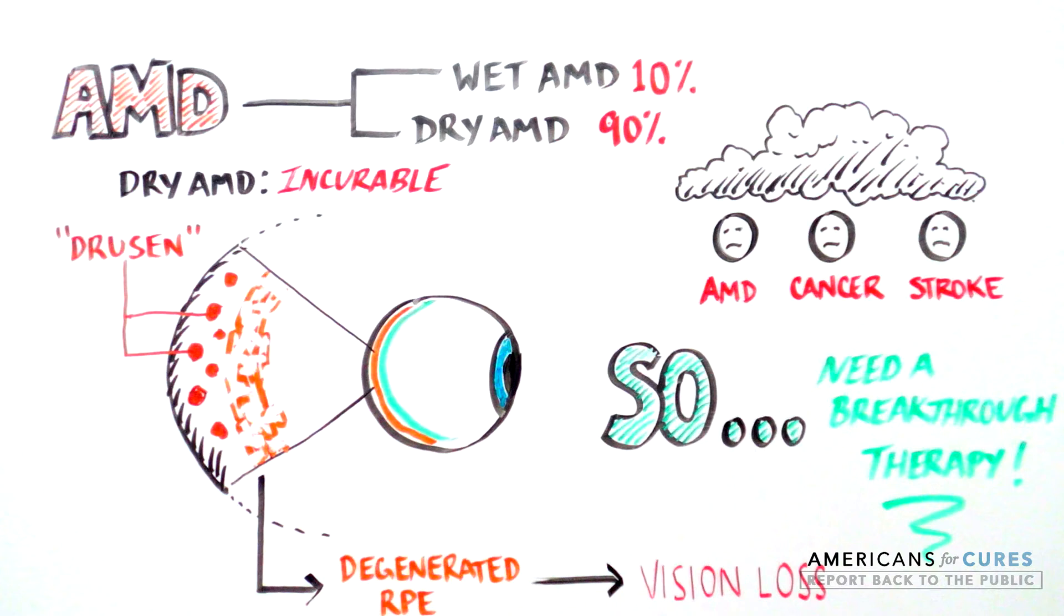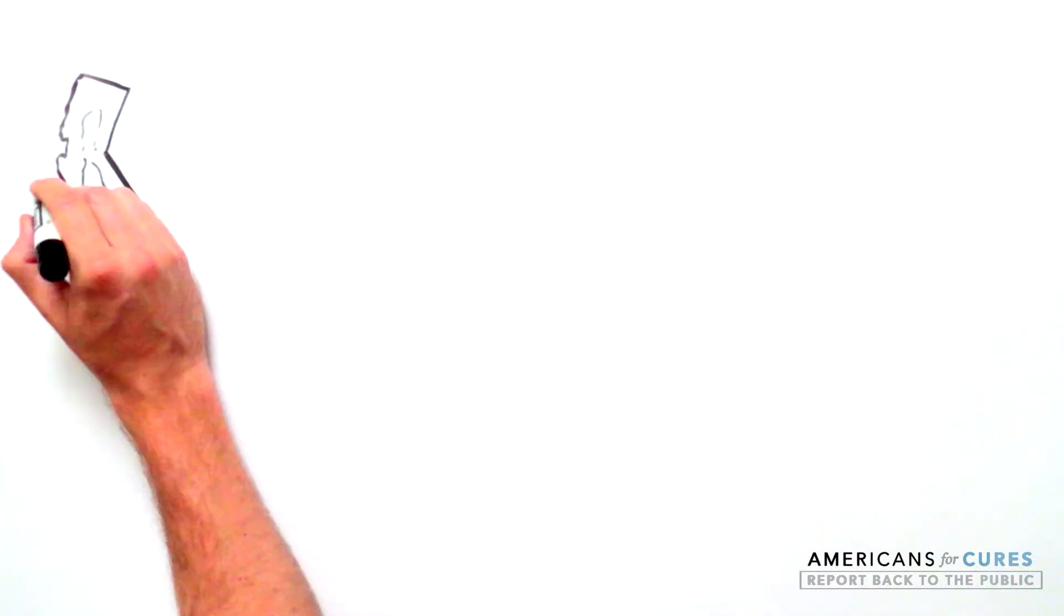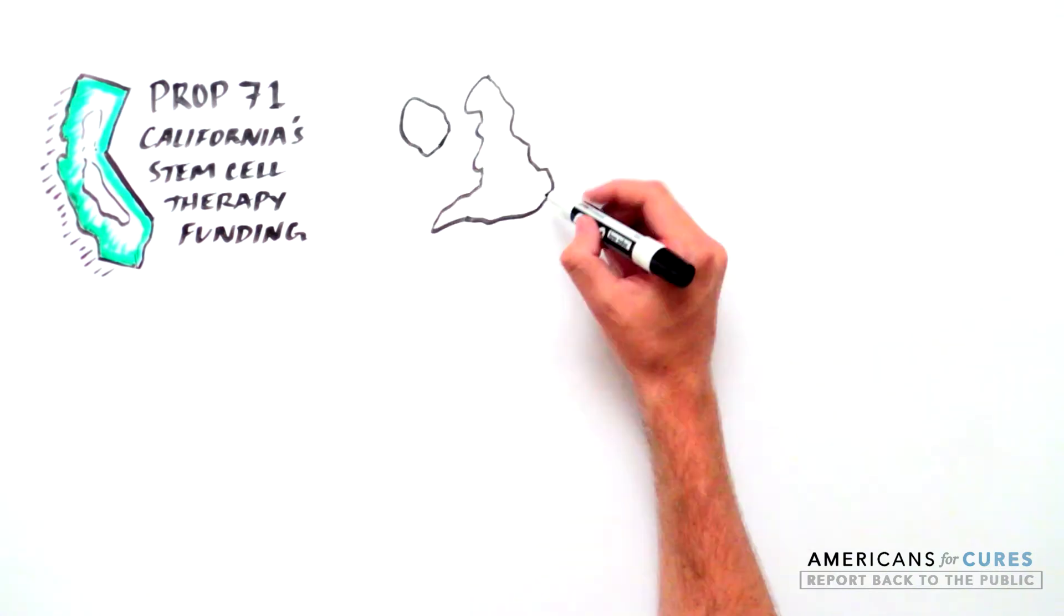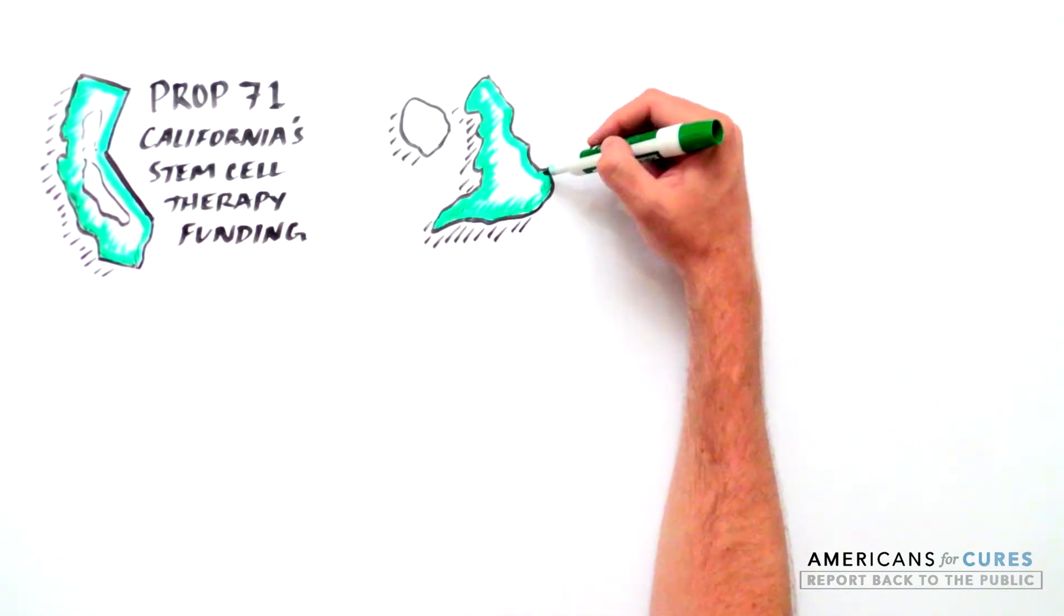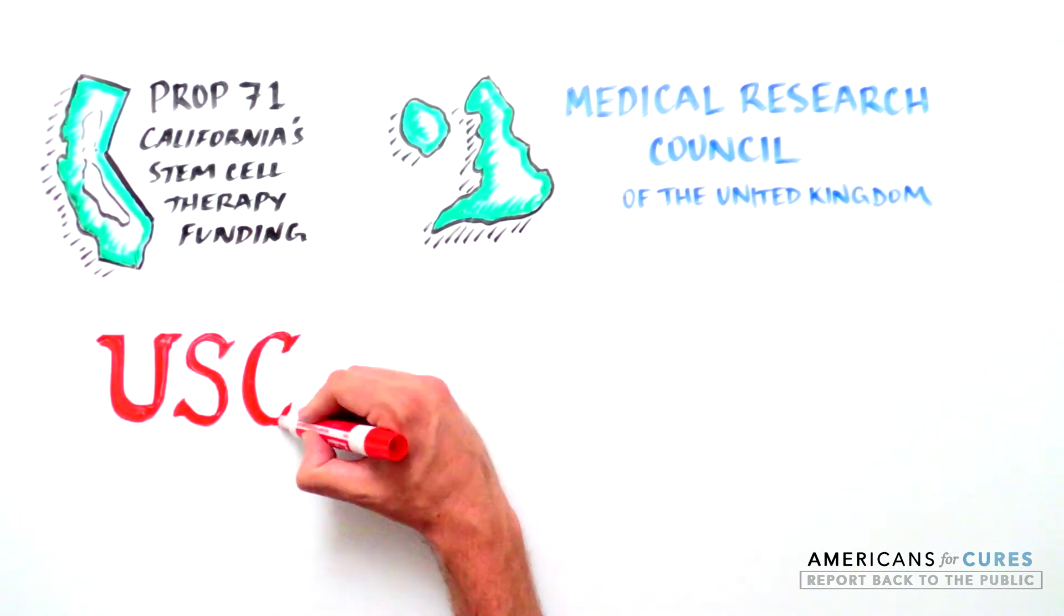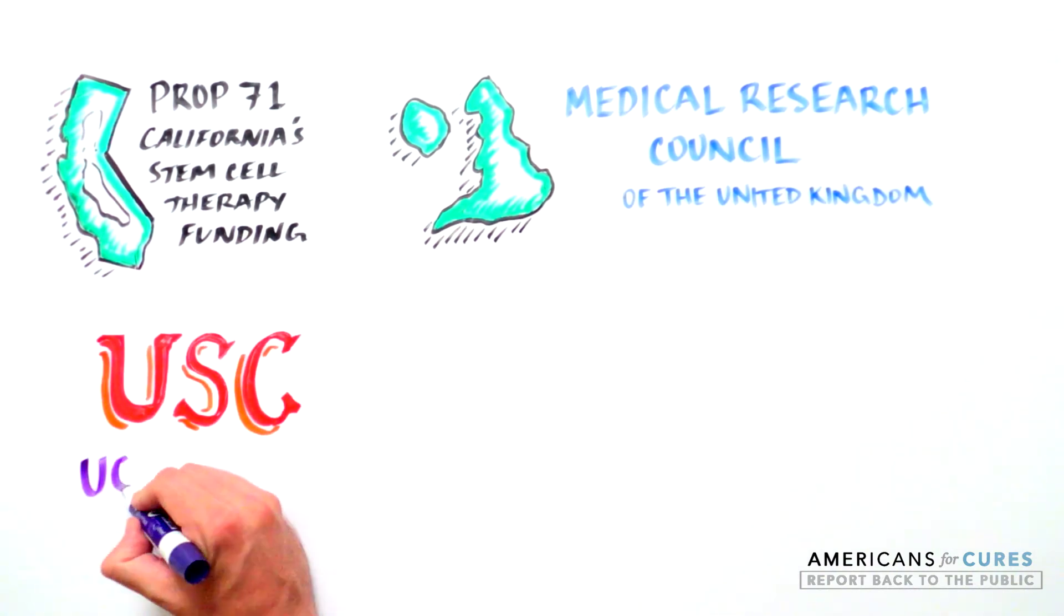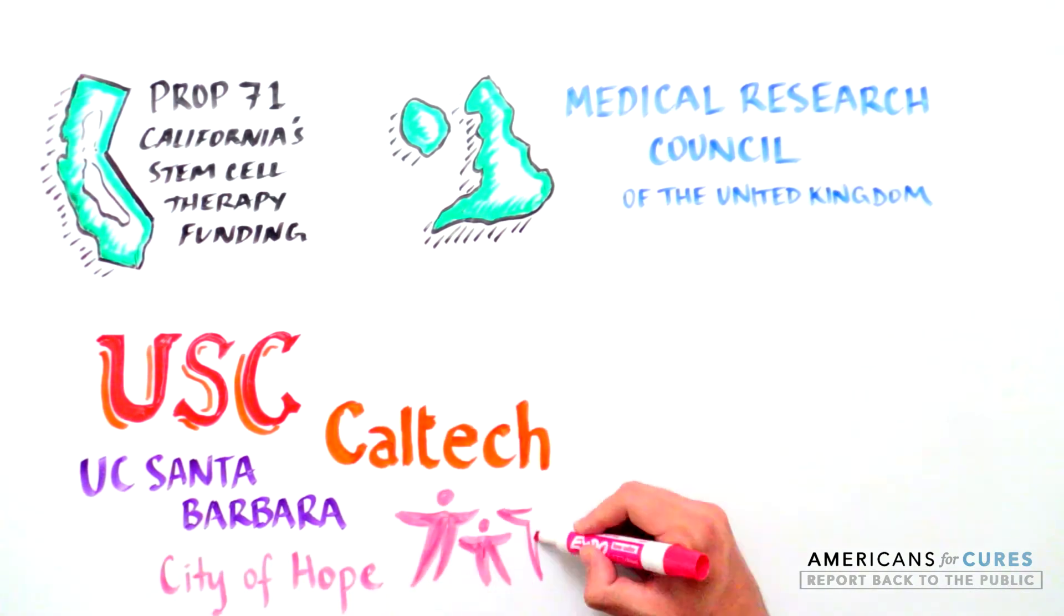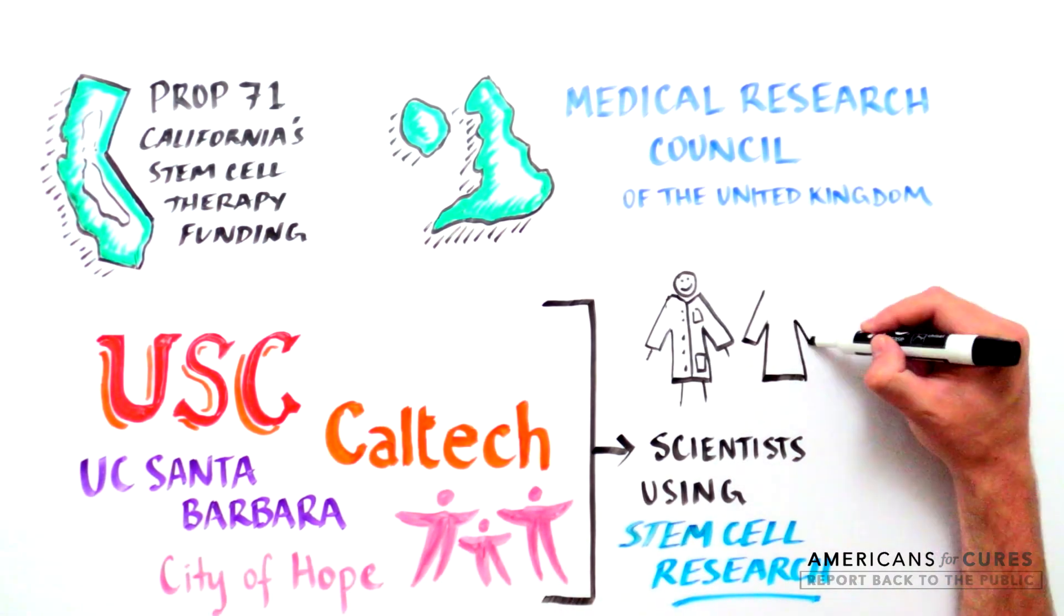Stem cells may offer an answer. Using California's stem cell therapy funding through Proposition 71, with the support of an international partnership with the Medical Research Council of the UK, a group of pioneering scientists at the University of Southern California, in collaboration with the University of California at Santa Barbara, Caltech and the City of Hope are turning to stem cells to try to treat AMD.